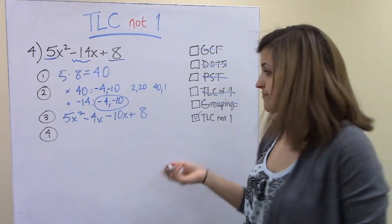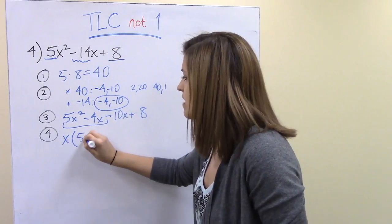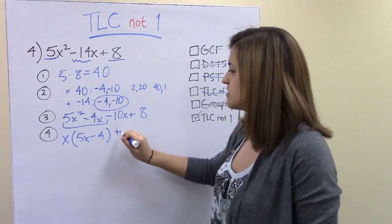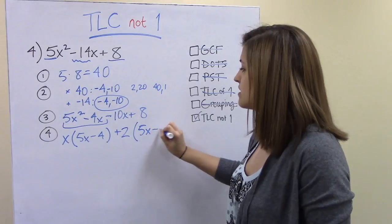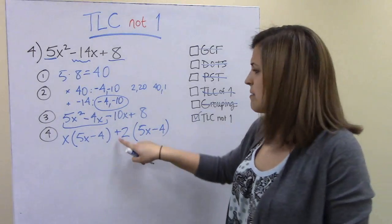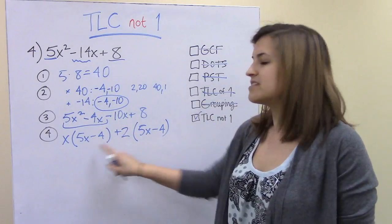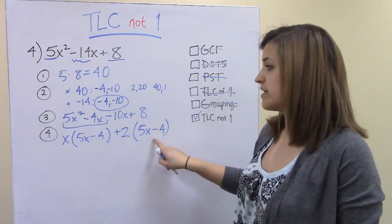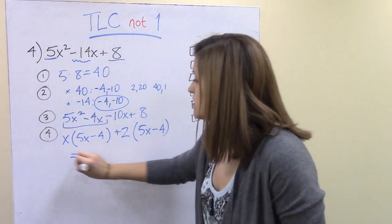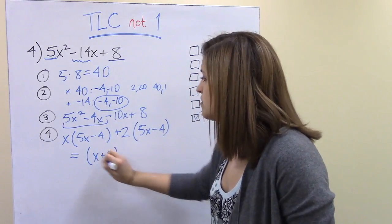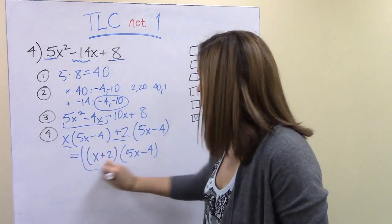Now solve by grouping: group the first two terms and the last two. We get x(5x − 4) + 2(5x − 4). Notice we use positive 2 so that both grouped factors match as (5x − 4). This factors into (x + 2)(5x − 4).